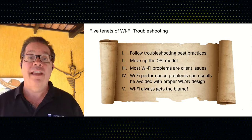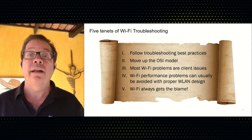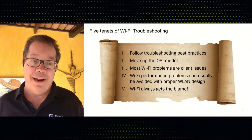I want to talk first about what I call the five tenets of Wi-Fi troubleshooting. We'll be hitting all of these throughout the presentation. Number one: follow basic troubleshooting best practices, move up the OSI model. Number two: most Wi-Fi problems are actually client-based, not necessarily the access point. Number three: Wi-Fi performance problems can usually be avoided with proper wireless LAN design. And the fifth one: Wi-Fi will always get the blame no matter what.